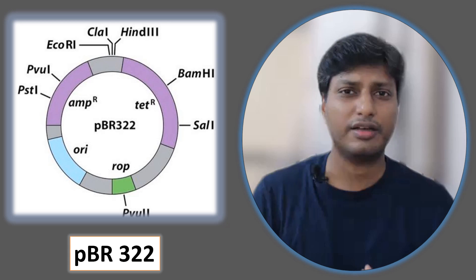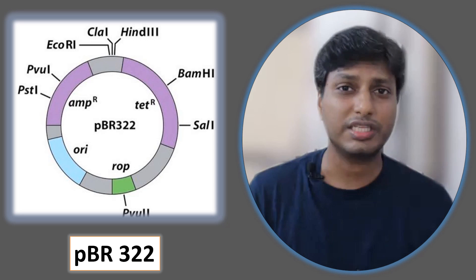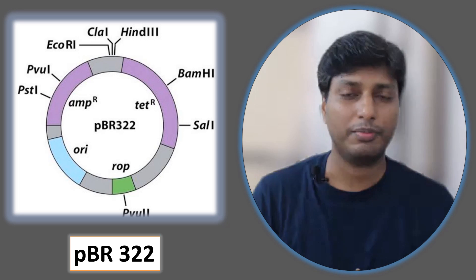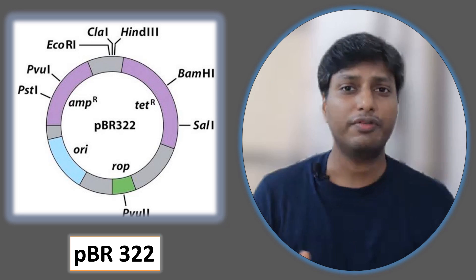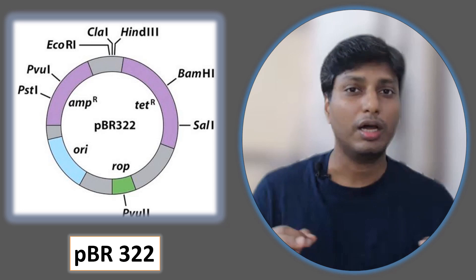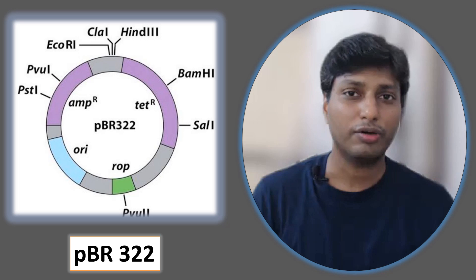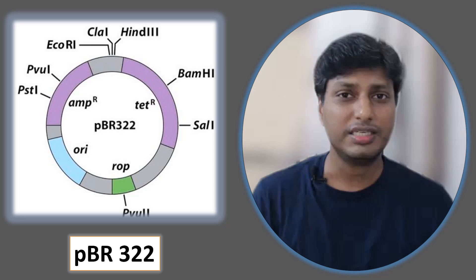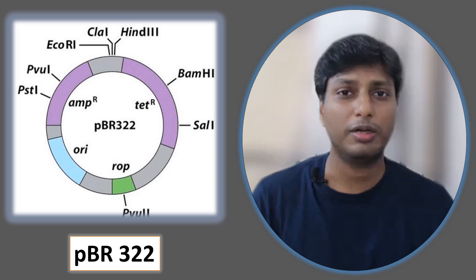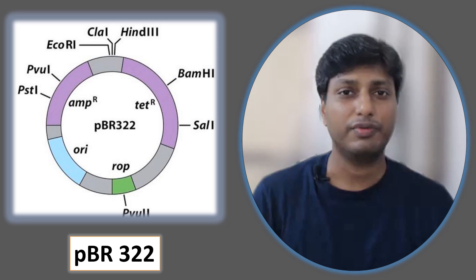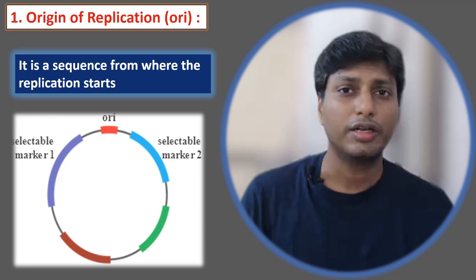In biotechnology, there are different vectors which can be used — a vector like a plasmid, which is actually an extra chromosomal DNA of a bacteria, or even bacteriophages, yeast artificial chromosomes, which can be used as a vector. In this particular video, we are going to understand the features of a particular plasmid, which is nothing but PBR322.